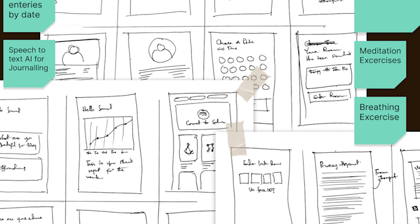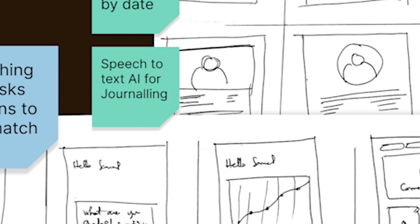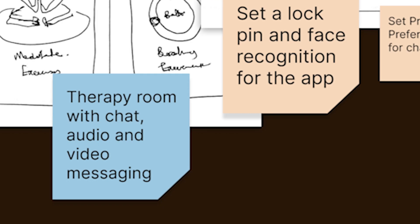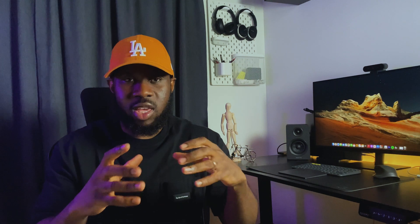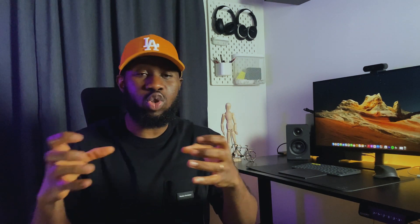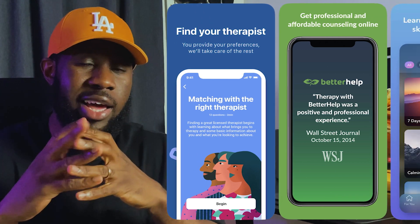These features include gratitude journals, AI matching agents, speech-to-text AI for journaling, meditation exercises, audio and video messaging, and so on. During the ideation phase, you can also conduct a competitive analysis of existing solutions in the space — understanding their strengths and weaknesses, areas of opportunity, and how you can stand out with your own solution. For this project, I analyzed one-to-one therapy apps like Talkspace and BetterHelp, and also looked at mindfulness and meditation apps like Calm.